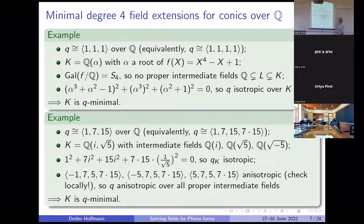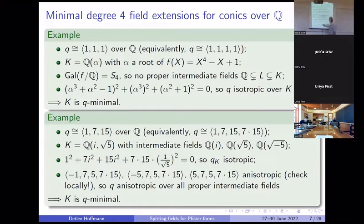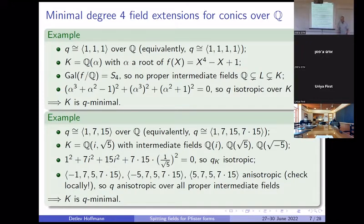Let's look at an example where there are intermediate fields and where I have to check everything. I took a biquadratic extension, and I took the quadratic form associated with the Pfister form. I take the extension generated by square root of minus one and square root of five. I wrote down an equation showing this one becomes isotropic. And you see in that equation you need both roots adjoined. You can basically check it over the base field using the Hasse–Minkowski theorem; it's not a difficult check. Then you see it will not become isotropic over any of the three intermediate fields, so that would again be a minimal extension.